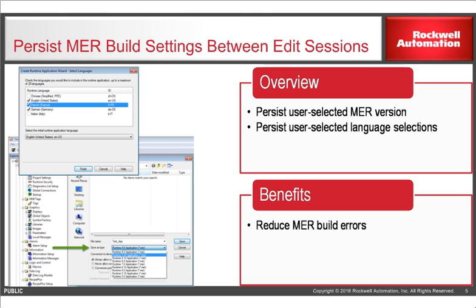Another improvement we've made is in building the MER files. Often in the past, when you built an MER, you had to remember to add the languages you wanted for language switching, or change the version number of the MER to the proper previous version you were trying to build. For instance, if you were using Factory Talk View Studio 9.0 and wanted to build a 7.0 MER, you had to remember to change that setting. In 9.0, Studio will actually persist those settings between edit sessions, saving you time and trouble if you don't build the right one the first time.